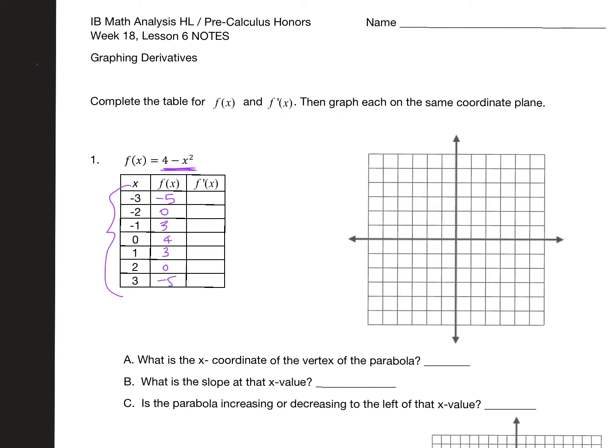When I graph that parabola, it should end up looking like this. Then if we do the derivative — this is asking us to come up with the y-values of the derivative — the derivative of this function is just negative 2x. When you fill in the chart it looks like this, and when you graph it, it looks like this.